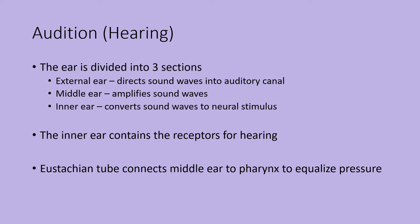Audition, which is hearing, involves the ear. The ear is divided into three sections: the external ear, the middle ear, and the inner ear. The external ear directs sound waves into the auditory canal. The middle ear amplifies those sound waves. The inner ear converts the sound waves into a neural stimulus — that's where the receptors are. The Eustachian tube connects the middle ear to the pharynx and helps equalize pressure.